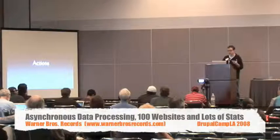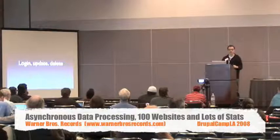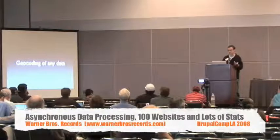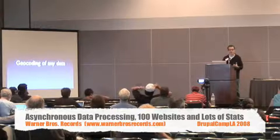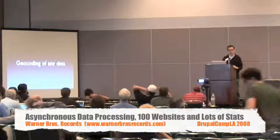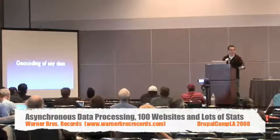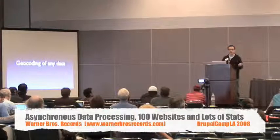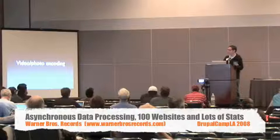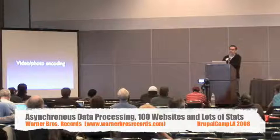On the Drupal side of things, we're creating actions that send to Spread for things that involve data exchange and data that needs to get processed — login, update, geocoding of data. If we put in any data with a zip code, instead of doing geonames in-band — which is what the location module does and which doesn't scale at all — we're doing it out of band. If you get a registration a second as we do in some cases, it doesn't scale. Video and photo encoding is also handled this way — which is what Flickr uses Spread for.